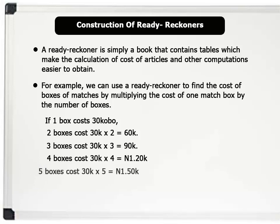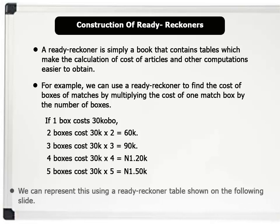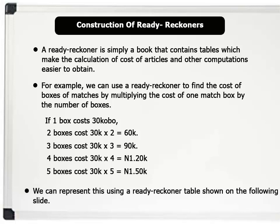And 5 boxes cost 30 colbo times 5, which equals 1 nara 50 colbo. Now, we can use this information to construct a Ready Reckoner table, shown in the following slide.